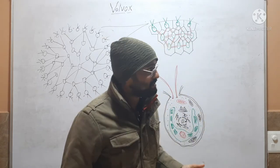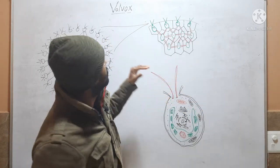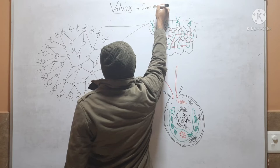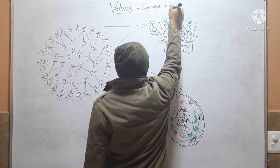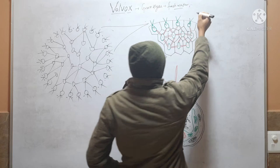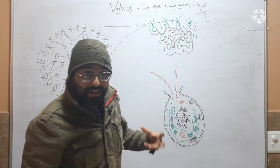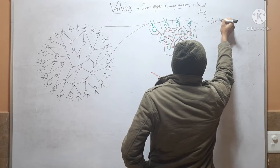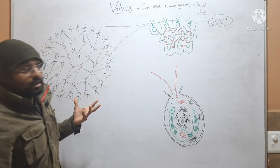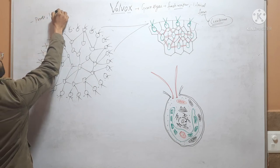In this video we will discuss habitat, thallus organization or colony organization, and cell structure of Volvox. Volvox is a green algae found in fresh water and is present in colonial form. This type of colony is called a coenobium. It is found in ponds and lakes.